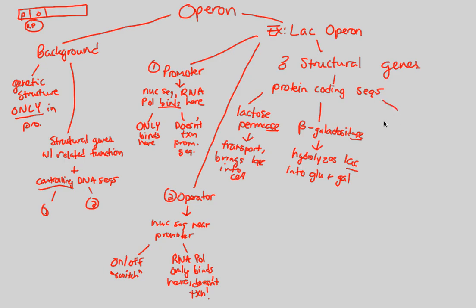The last structural gene is galactosidase transacetylase — a very fancy name, but just understand it is another enzyme. So in the lac operon we have three structural genes: lactose permease, beta-galactosidase, and galactosidase transacetylase — genes 1, 2, and 3 — right next to our promoter and operator sequences.